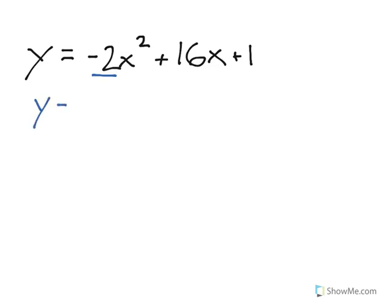So we're going to start by factoring out this leading coefficient, so the negative 2, out of the first two terms. So I'm left with x squared minus 8x, and then a closed bracket plus 1. We always have to factor this entire value out, no matter what it is. It has to come out of the first two terms.